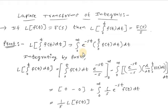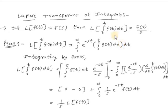In the fundamental definition of Laplace transform, we replace f(t) by the integral from 0 to t of f(t) dt. So we have the integration from 0 to infinity of e^(-st) times the integral from 0 to t of f(t) dt, all times dt.